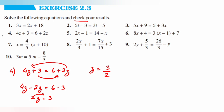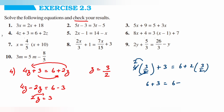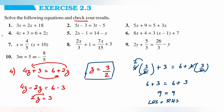Now we'll verify by substituting z is equal to 3 upon 2: 4 into 3 upon 2 plus 3 is equal to 6 plus 2 into 3 upon 2. Cancelling 2 and 4 gives 2, so 2 times 3 is 6, and 6 plus 3 is 9 on the left. On the right, cancelling 2 gives 3, so 6 plus 3 is 9. So 9 is equal to 9, LHS equals RHS. z is equal to 3 upon 2 is correct. Now the fifth question.